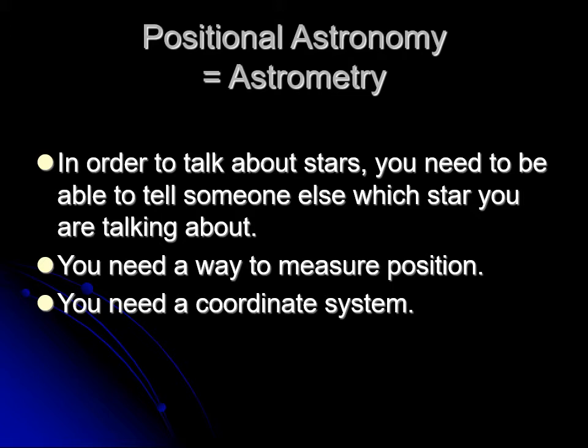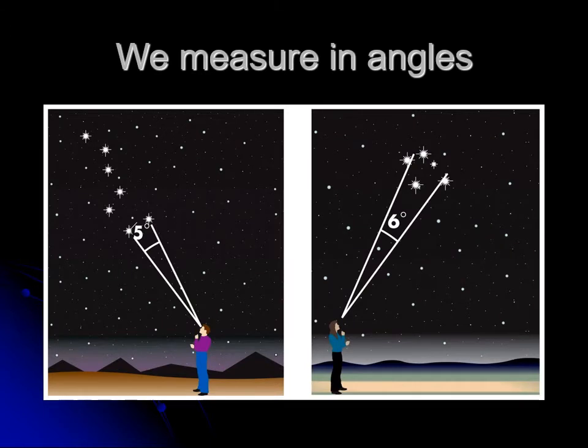You can't just say go look out the window and see something. You need to tell what direction to look. You can't say I see something that looks like six inches from something else, because six inches looks like a different angle depending on how far away it is from you. In astronomy, we measure angles, angular measures.